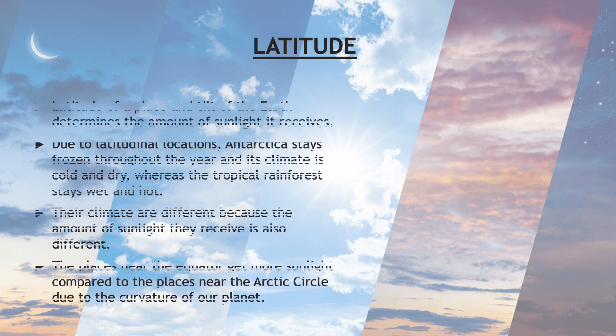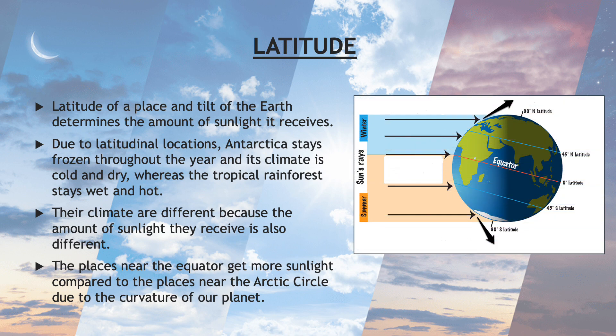Let's start with latitude. Latitude of a place and tilt of the earth determines the amount of sunlight it receives. Due to latitudinal locations, Antarctica stays frozen throughout the year and its climate is cold and dry, whereas the tropical rainforest stays wet and hot.